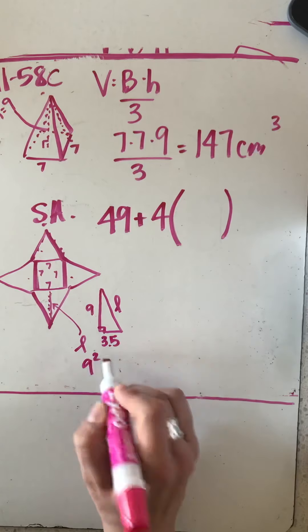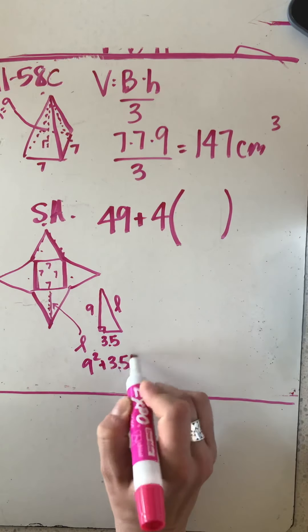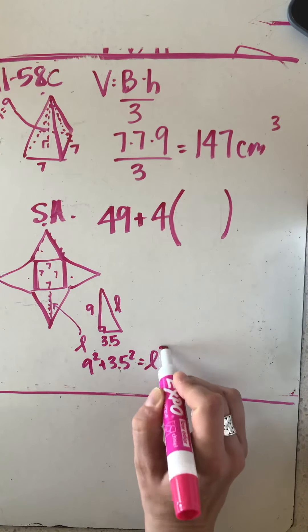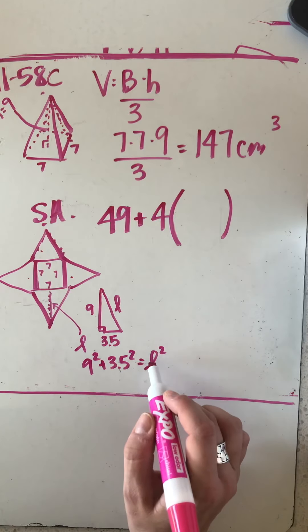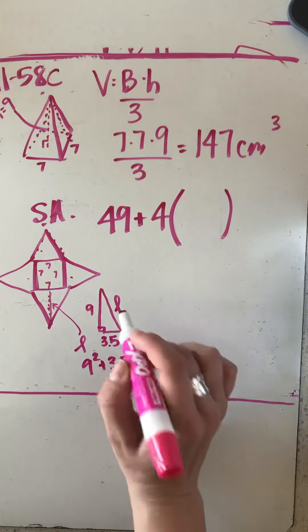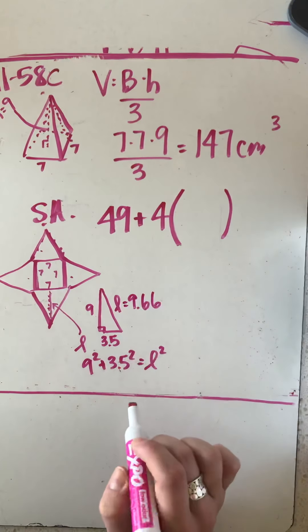So nine squared plus 3.5 squared equals my slant height squared. Add those together and take the square root and you're going to get about 9.66 for your slant height.